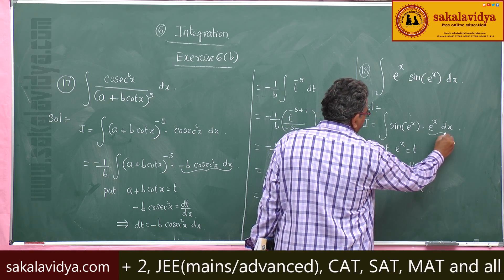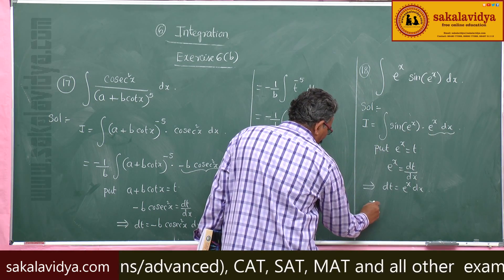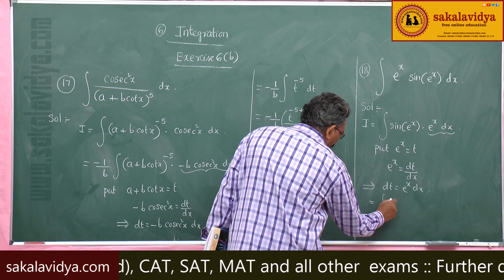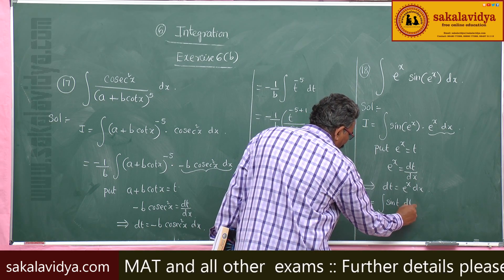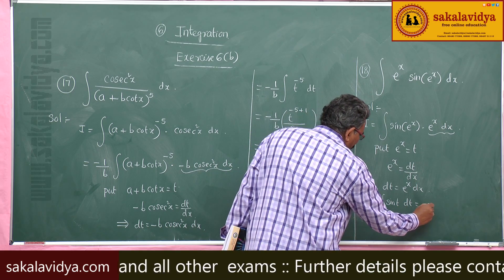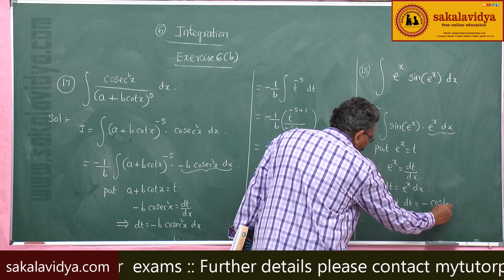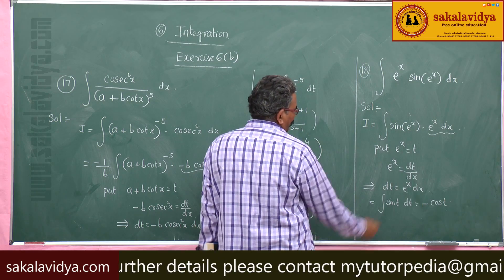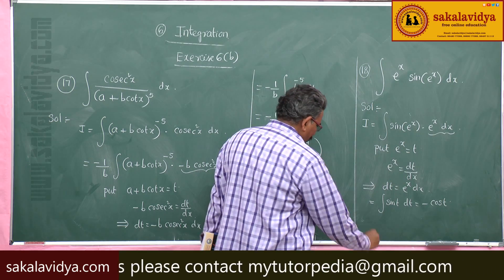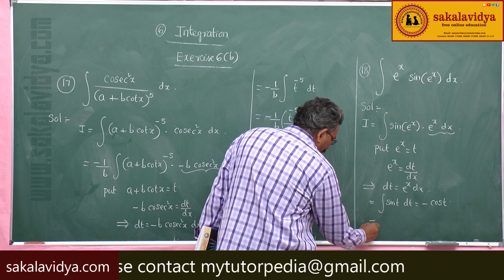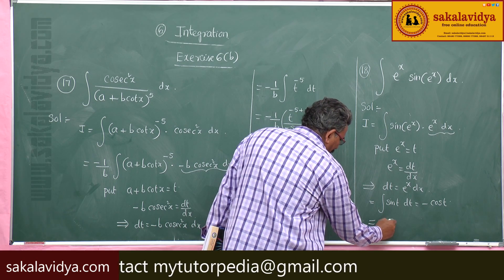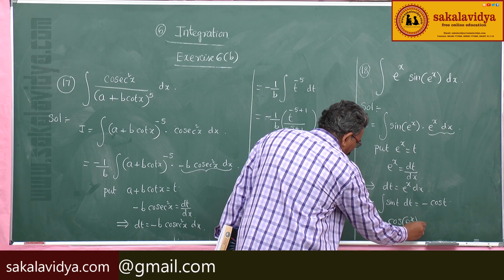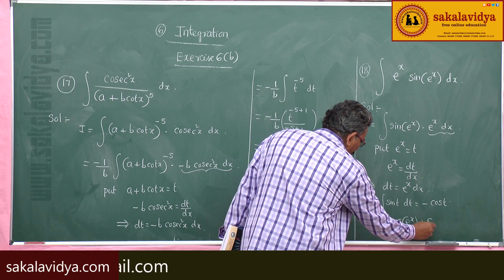Substituting, e to the power x dx becomes dt and e to the power x becomes t. So the integral becomes the integral of sin t dt. That gives minus cos t. Since t is e to the power x, the answer is minus cos(e to the power x) plus constant of integration.